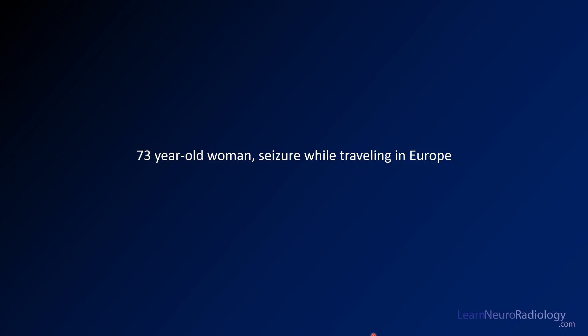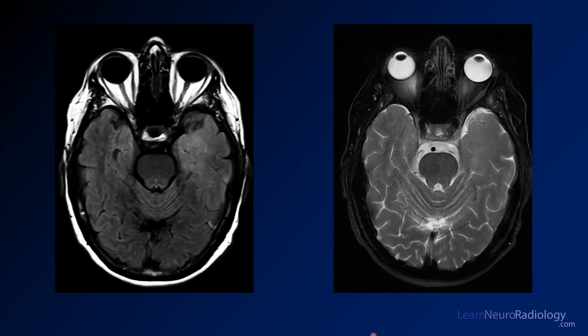Here we'll start with a case. This is a 73-year-old woman who had a seizure while traveling. Here you see a couple of images. On the left, we have an axial FLAIR image. You see a little bit of fullness of the left mesial temporal lobe here.